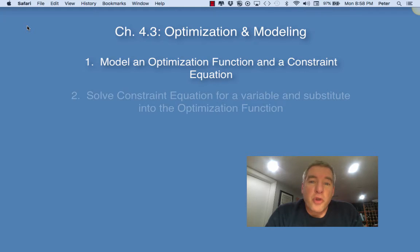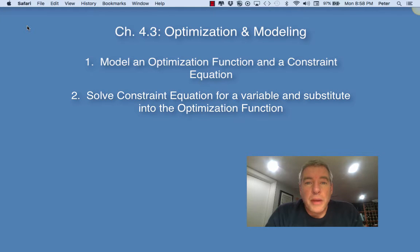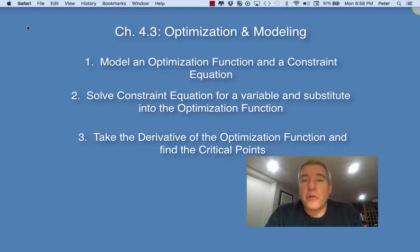We will then solve the constraint equation for one variable and substitute it into the optimization function. From there, it's usually pretty easy for students because we've already learned about how to maximize and find critical points. So you find the derivative, solve for the critical points, and then you test them to make sure that they are, in fact, critical points. So it's a pretty easy process once we've modeled the function, and so that's going to take a lot of practice. We're going to work through three examples in this video, and please take careful notes, and I hope that this helps and that you can apply it to the problems in the exercises.